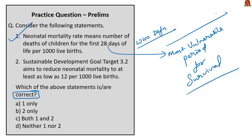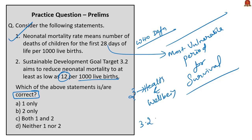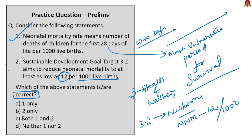The second statement: Sustainable Development Goal target 3.2 aims to reduce neonatal mortality rate to at least as low as 12 per thousand live births. SDG Goal 3 deals with health and well-being, and target 3.2 asks all countries to reduce neonatal mortality to at least as low as 12 per thousand live births. This statement is also correct. The correct answer is option C: both one and two.